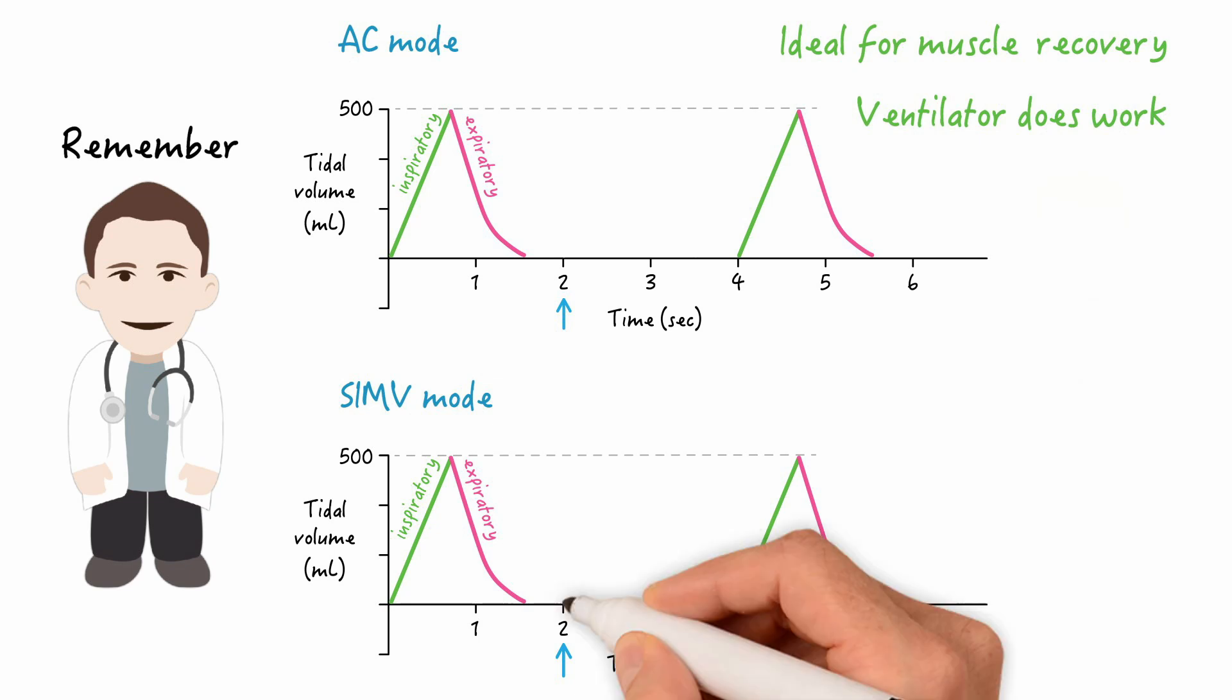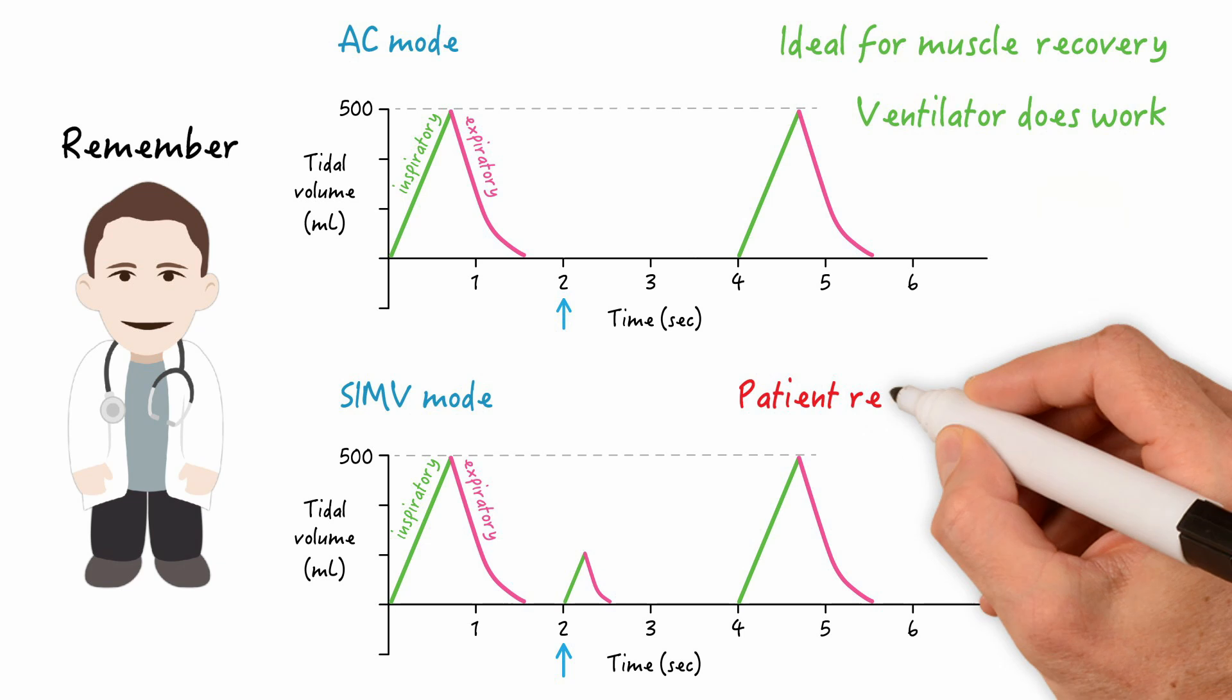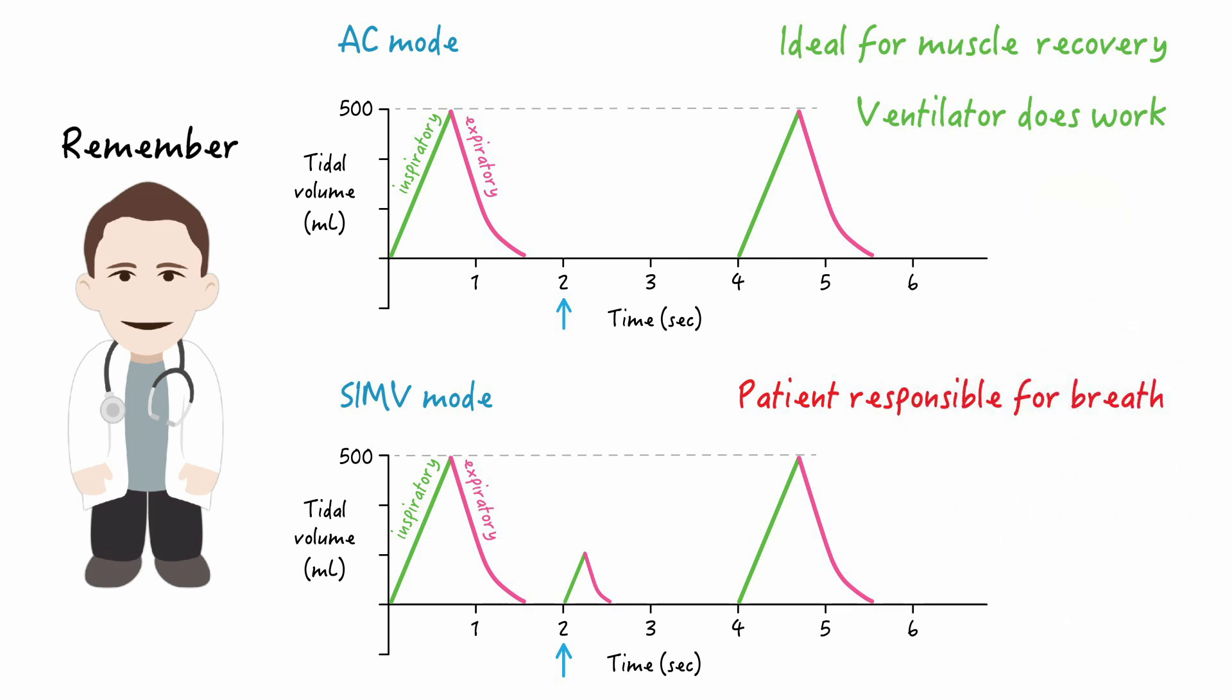Notice how in the SIMV mode, the full 500 milliliters isn't reached. In the SIMV mode, the patient is responsible for the volume received during a spontaneous or a triggered breath. And initially, when the patient is weak and the lungs are impaired, the patient may not be strong enough to draw a full breath. So this type of shallow breathing may actually contribute to hypoventilation and continued respiratory muscle dysfunction.